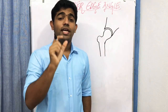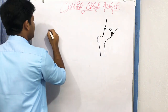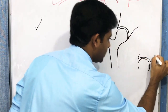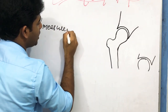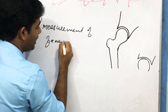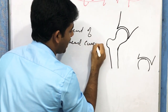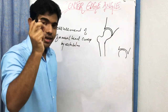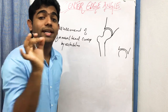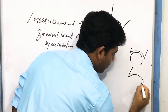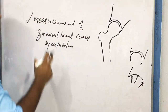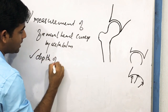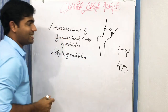The center edge angle is a measurement of femoral head coverage by the acetabulum. The femoral head is covered by the acetabulum, so this angle measures how much coverage exists. It can also be used as a measurement of acetabular depth — the depth of the acetabular fossa.